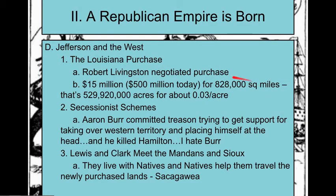Jefferson criticized the bank because it's nowhere in the constitutional powers, yet he's going to make a huge land purchase — the Louisiana Purchase from Napoleon — also not in the Constitution. This shows certain presidents shift from strict to loose constructionism when it serves their interests. Aaron Burr then tries to essentially become king of his own western territory, a form of treason. His general rats him out, so Burr flees to Europe to avoid charges. Once we purchase the land, we have to explore it — that's where Lewis and Clark comes in.